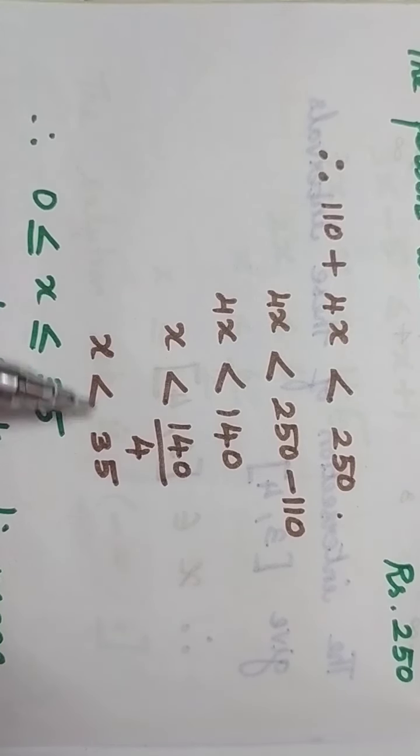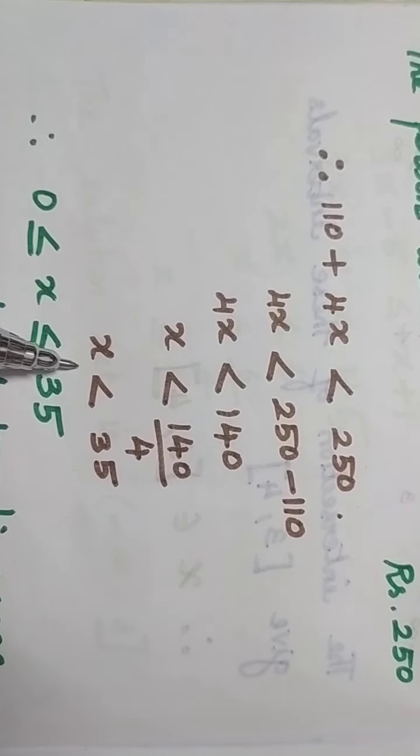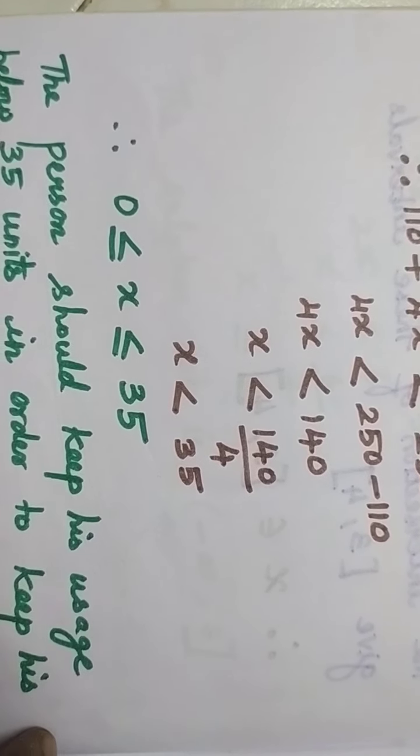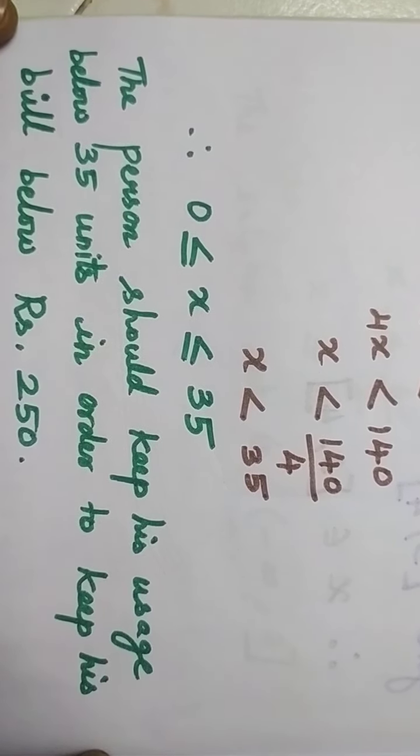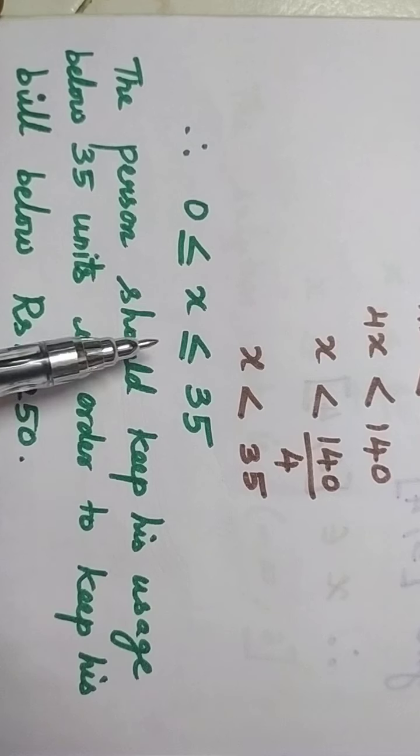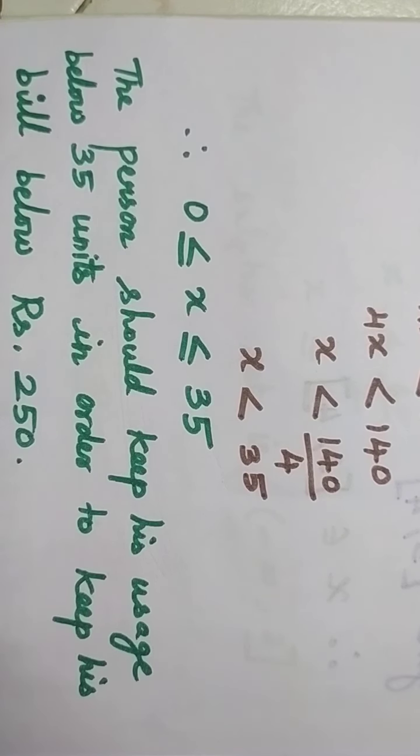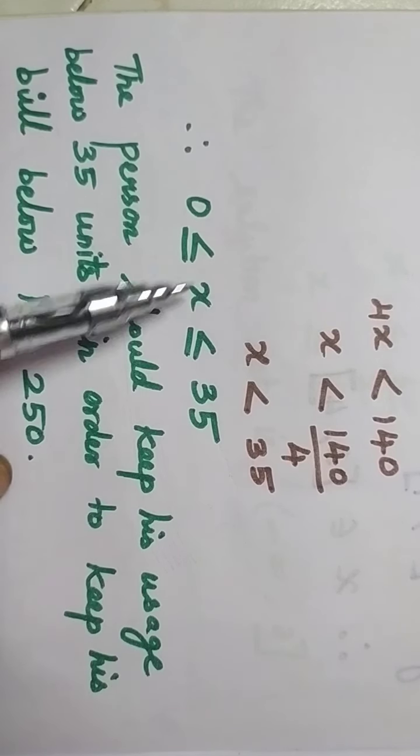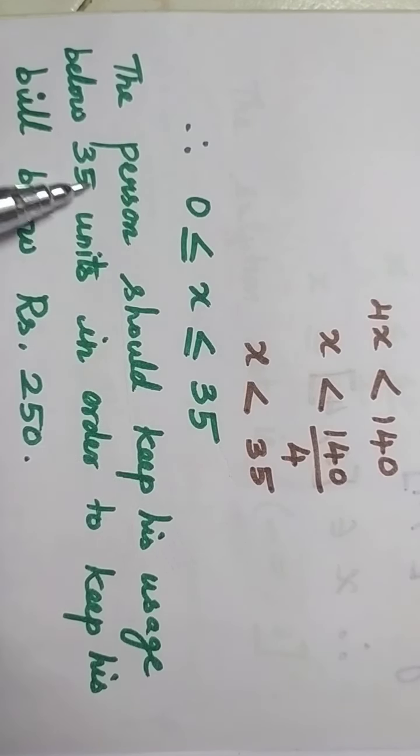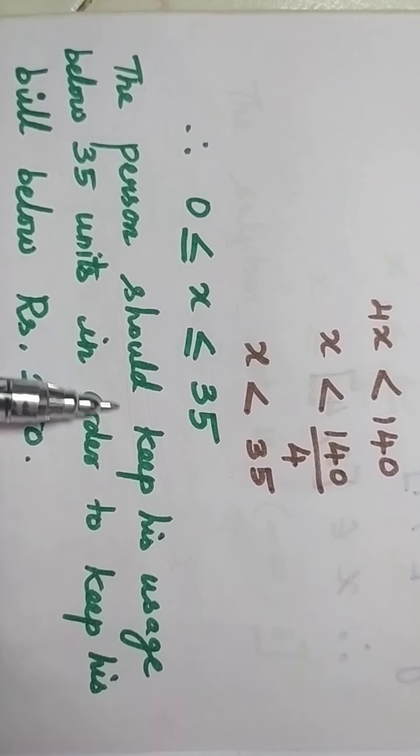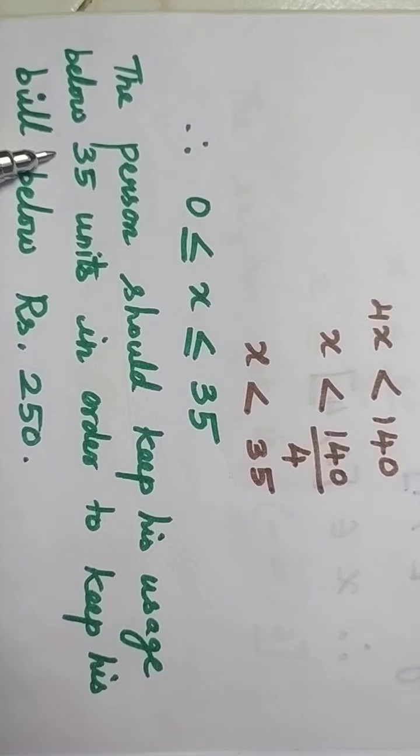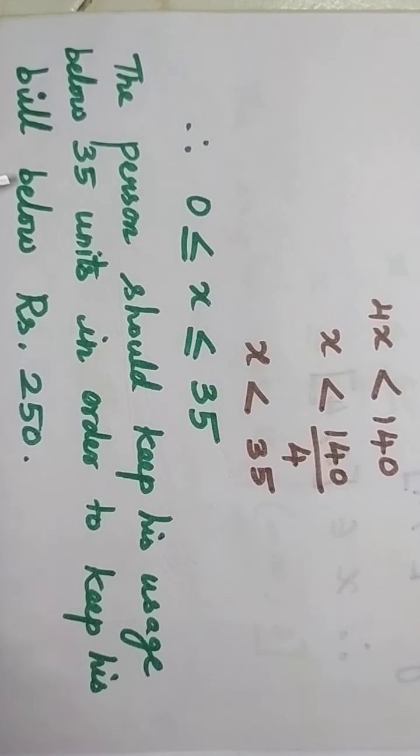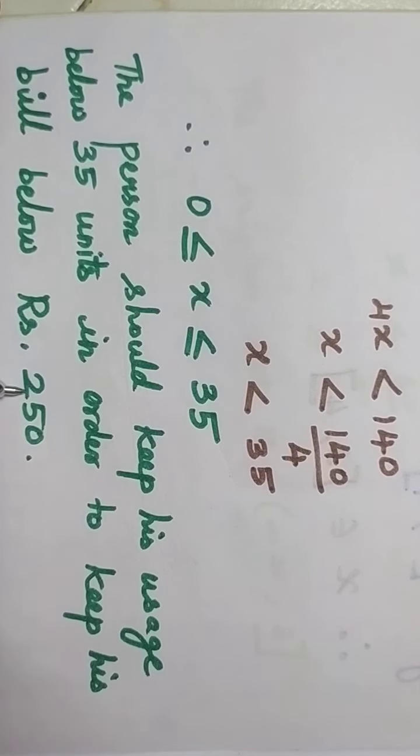So the number of units the person should use should be below 35 units. Then he will get an electricity bill below 250 rupees. So x should be between 0 and 35. The person should keep his usage below 35 units in order to keep his bill below rupees 250.